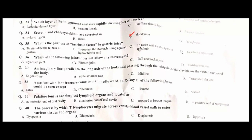What is the purpose of intrinsic factor in gastric juice? To assist with the absorption of cobalamin. C is the correct option. Which of the following joints does not allow any movement? Fibrous joint. B is the correct option.